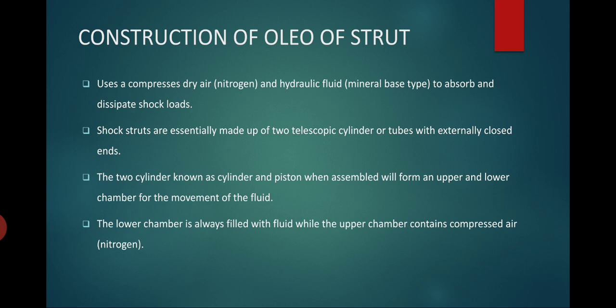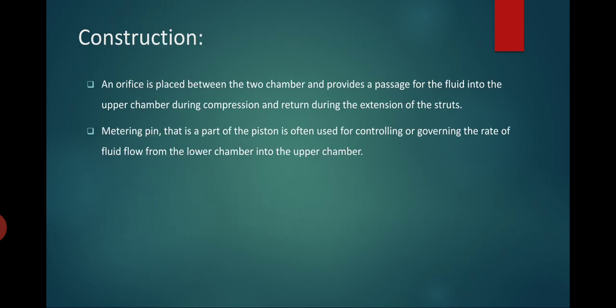The struts are essentially made up of two telescopic cylinders. When assembled, the cylinder and piston form an upper and lower chamber for the movement of fluid and air. The lower chamber is always filled with fluid, while the upper chamber contains compressed nitrogen. An orifice is placed between the two chambers, providing a passage for fluid into the upper chamber during compression and return during extension. A metering pin in the piston controls the rate of fluid flow from the lower chamber into the upper chamber.